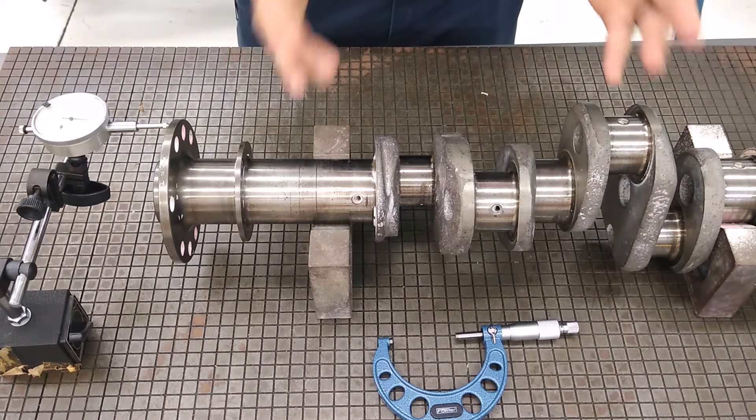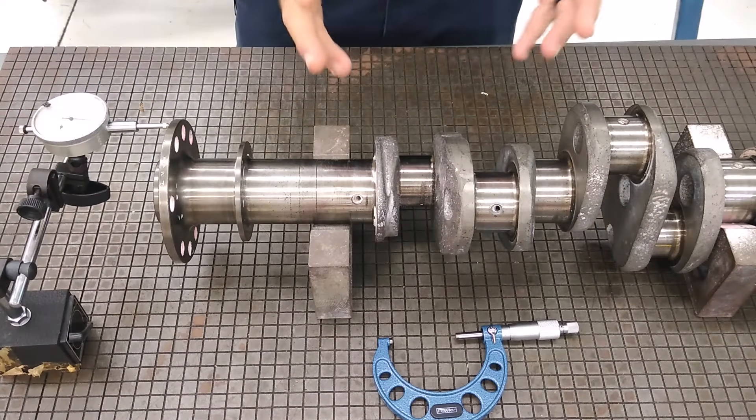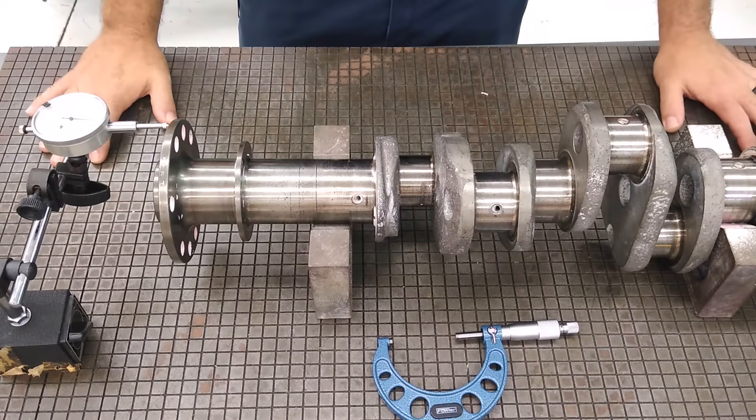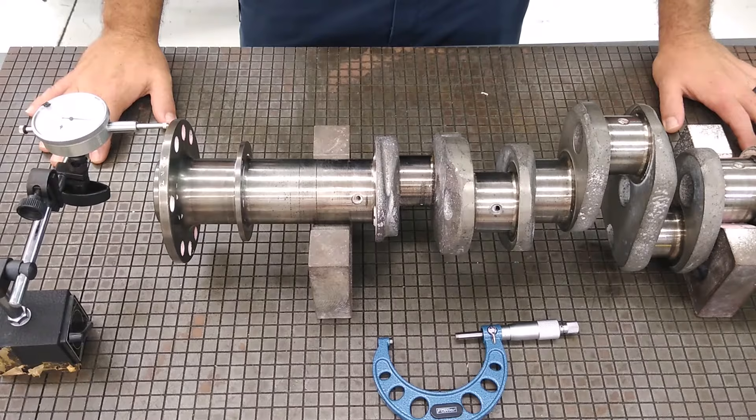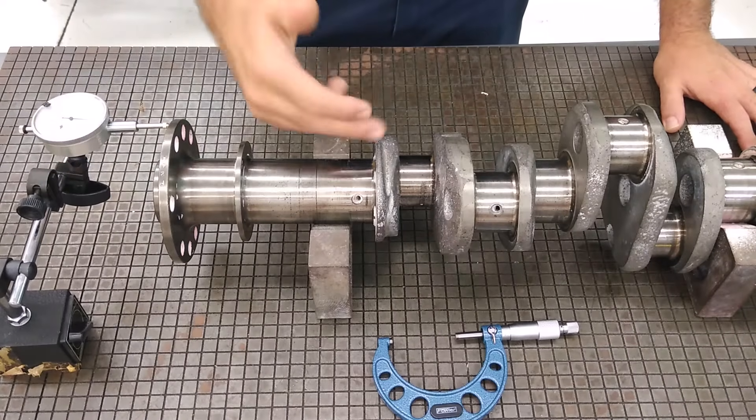We can measure run out. Let's start from the beginning. What is run out? Run out is a defect or a deviation from an intended shape of a rotating assembly.